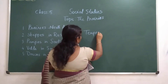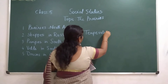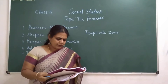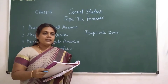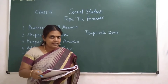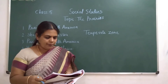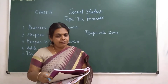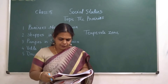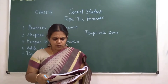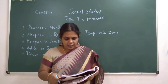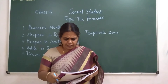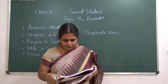You have learnt about the frigid zone and the torrid zone. The grasslands are located in the temperate zone. As they are away from the equator, they have less rainfall and low temperature. The winters are cold and dry, and the summers are hot with a moderate rainfall.